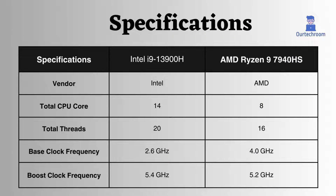The Intel Core i9-13900H has 16 cores and 20 threads, while the AMD Ryzen 9 7940HS has 14 cores and 16 threads. This means that the Intel has 4 more threads than the AMD Ryzen. Threads are important for multitasking and demanding workloads.